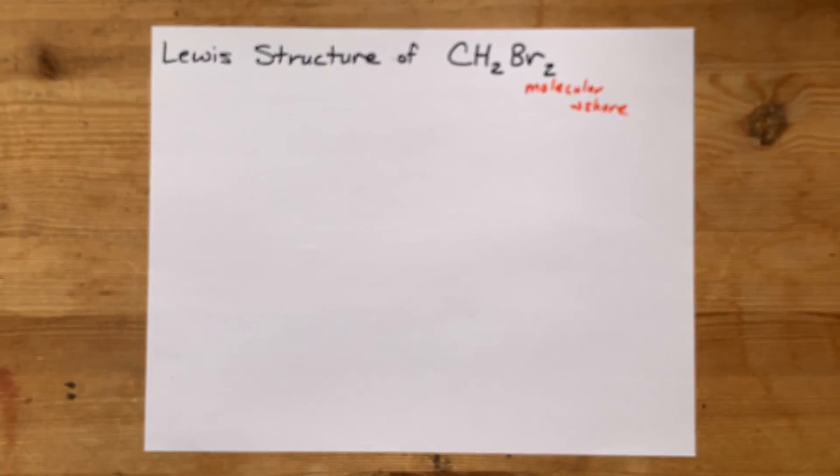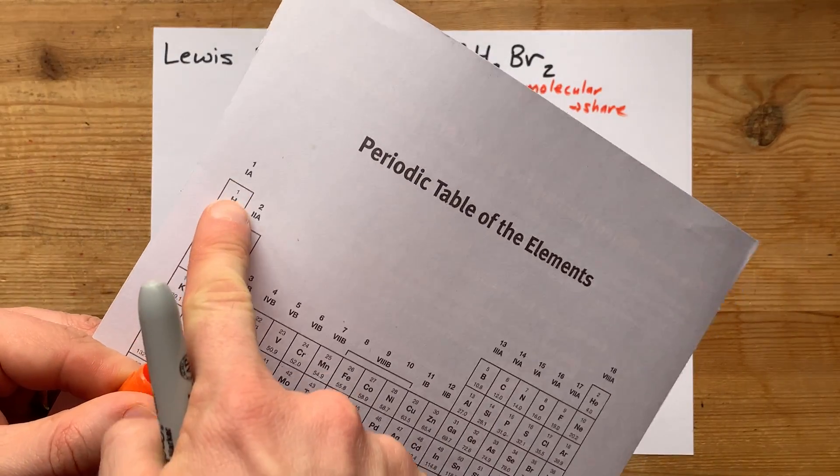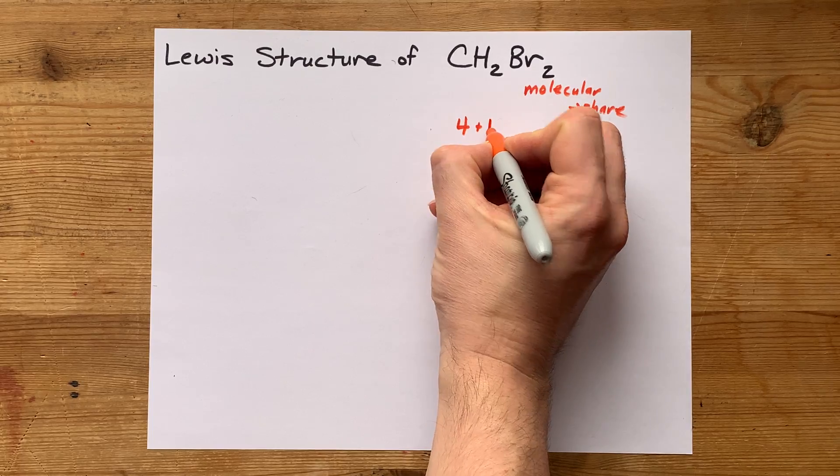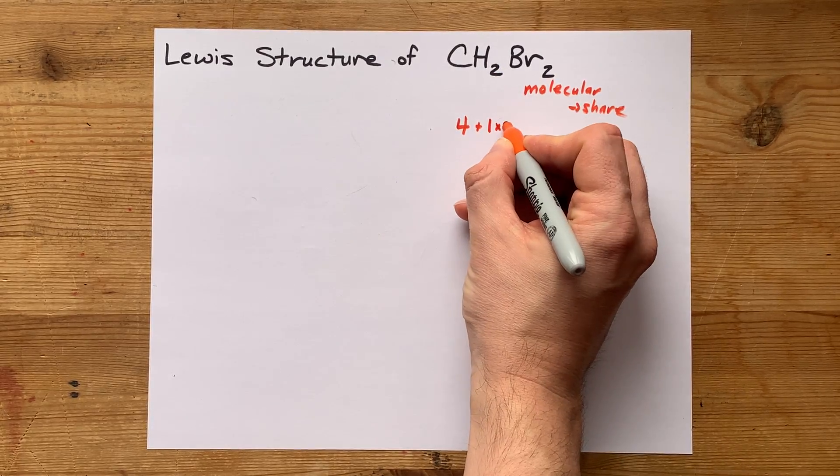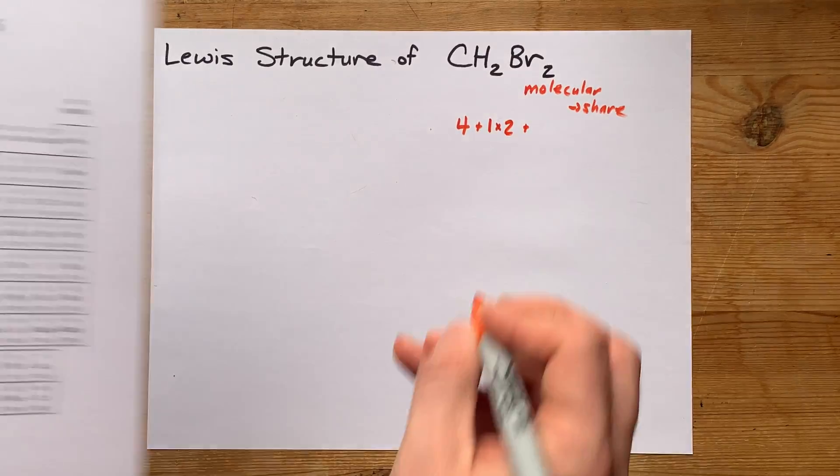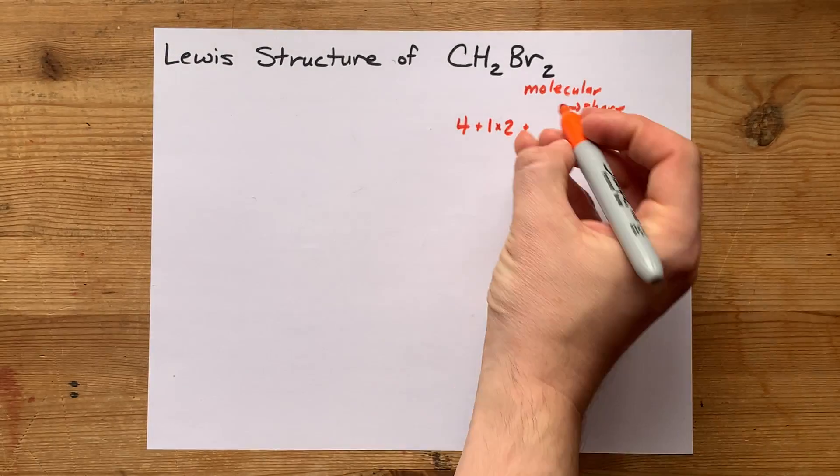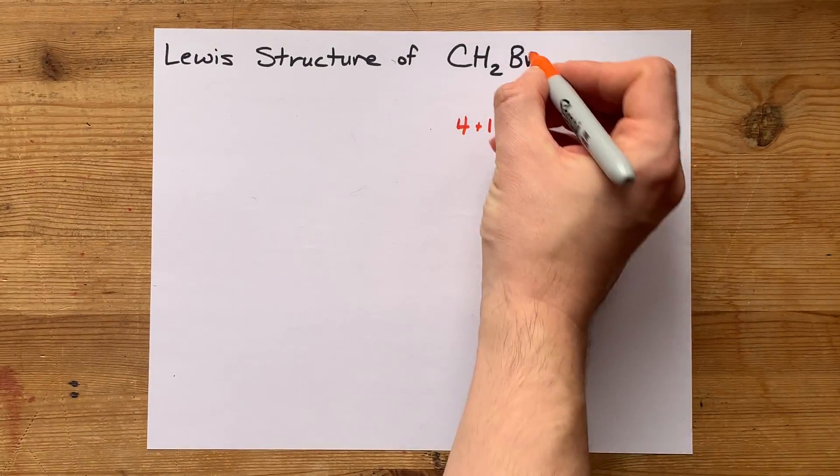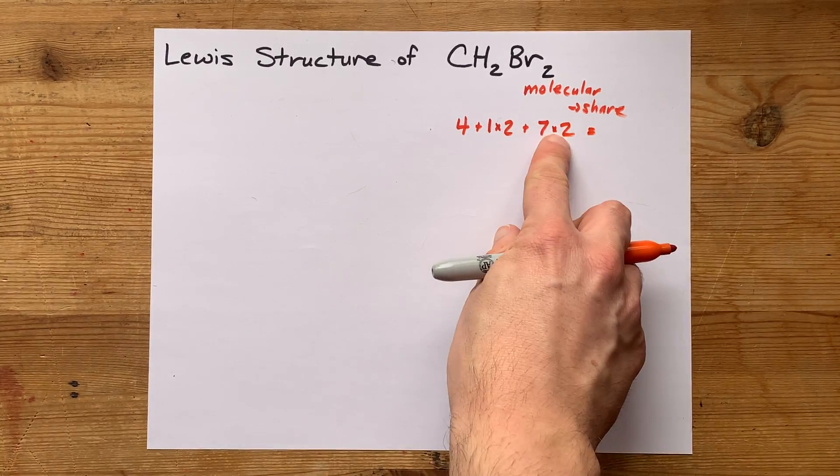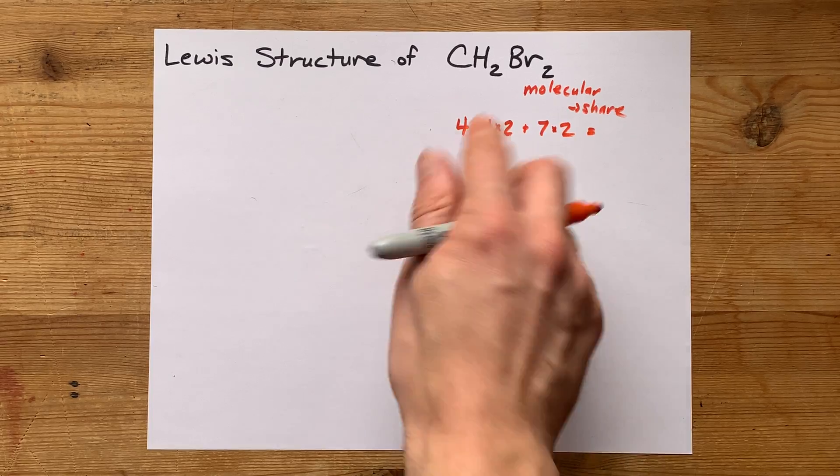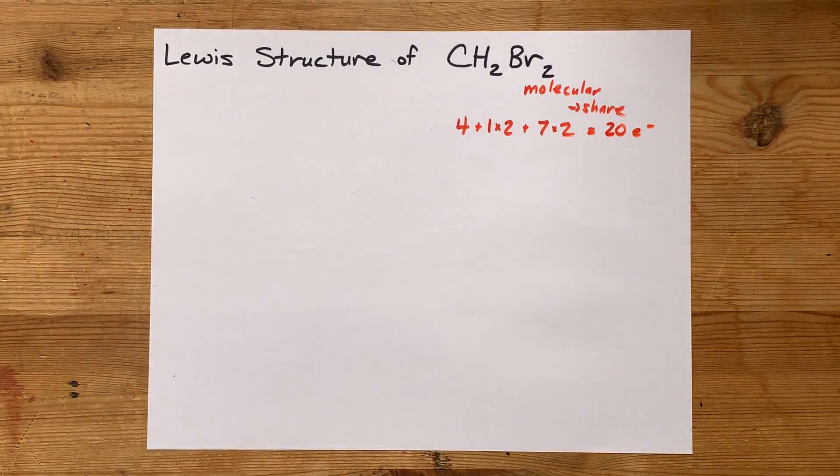Carbon in group 14 brings four valence electrons. Hydrogen in group 1 brings one valence electron, but there are two of them in the molecule, so I'm going to multiply that by two and add on bromine in group 17, which brings seven valence electrons. And there's two of them as well. So it's 14 plus 2, which is 16, plus another 4, is 20 electrons total for us to deal with.